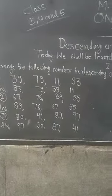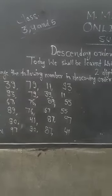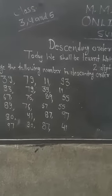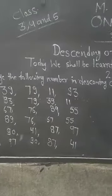67, 76, 89, 55. इसमें greatest number 89 है, फिर उससे छोटा 76, 67, and 55.